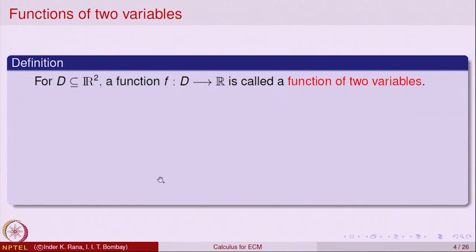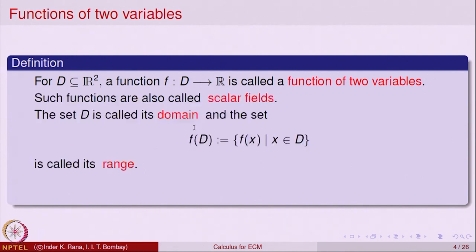Let us formally define that a function of two variables is a function with domain D, which is a subset of R², taking values in R. For one variable, the domain was a subset of the real line; for functions of two variables, the domain is a subset of the plane. Such functions are also normally called scalar fields, because the image of each point in D is a scalar.